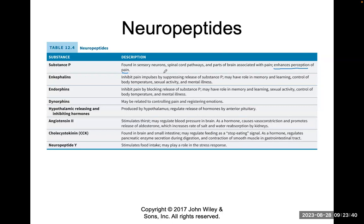Enkephalins inhibit pain impulses by suppressing the release of substance P. So substance P makes you feel the pain, and enkephalins can inhibit it. A lot of therapies can stimulate enkephalins — acupuncture can work very well, vibration therapy, hands-on therapy, and lots of medications can be used to block substance P.